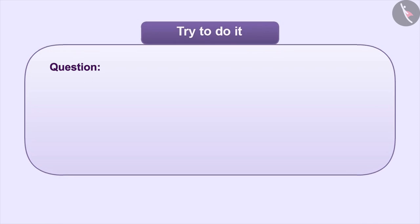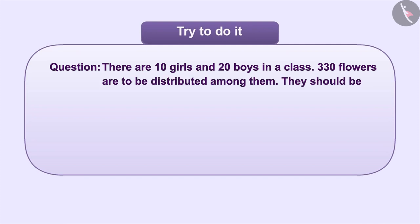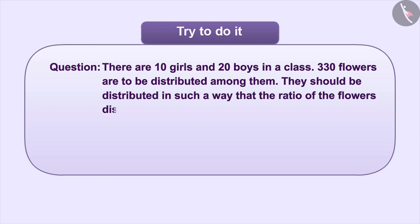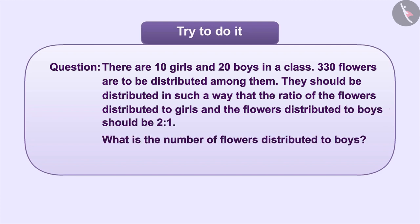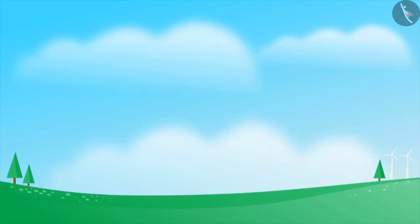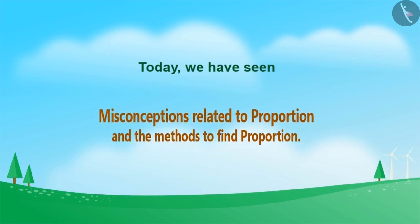Try this: There are 10 girls and 20 boys in a class. 300 flowers are to be distributed among them. They should be distributed in such a way that the ratio of the flowers given to the girls to the flowers given to the boys is 2 is to 1. Find out the total number of flowers that the boys will get. Today, we have seen misconceptions related to proportion and the methods to find proportion.